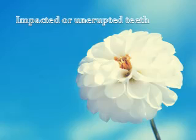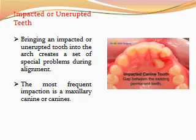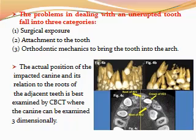Impacted or unerupted teeth — bringing an impacted or unerupted tooth into the arch creates a set of special problems during alignment. The most frequent impaction is a maxillary canine. The problems in dealing with unerupted teeth fall into three categories: surgical exposure, attachment to the tooth, and orthodontic mechanics to bring the tooth into the arch.